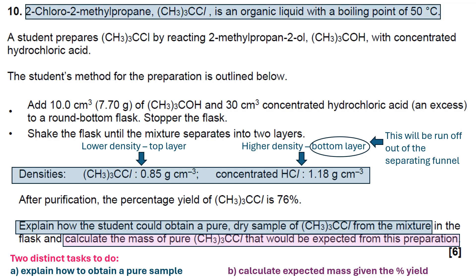It also mentions that 2-chloro-2-methylpropane is an organic liquid with a boiling point of 50°C. So that will be the temperature to distill the product off at once you've done the purification using the separating funnel and the drying agent.